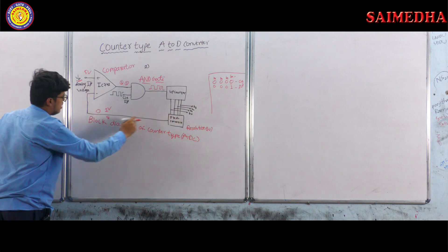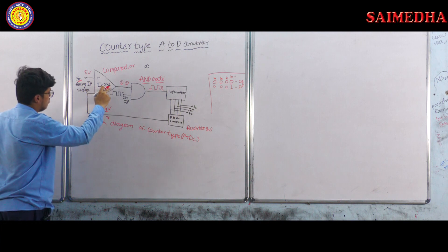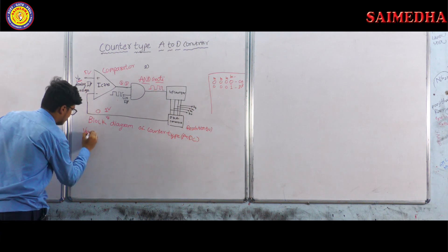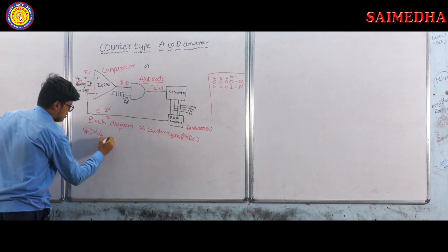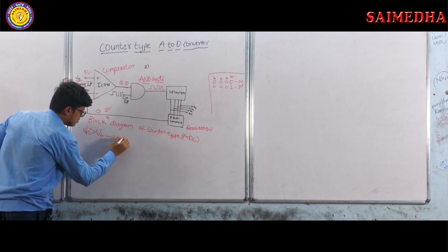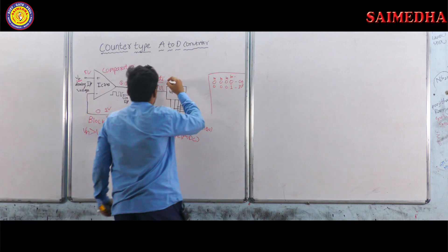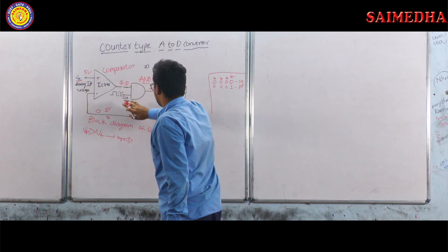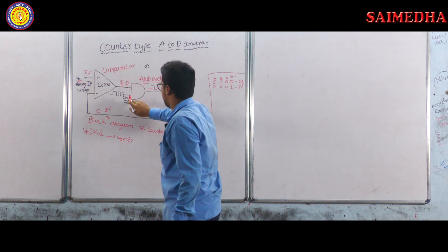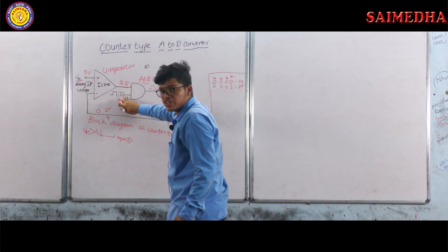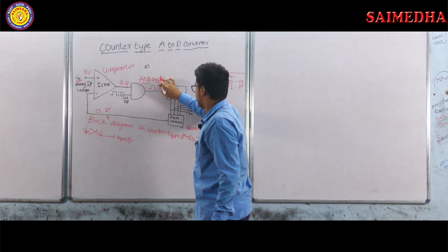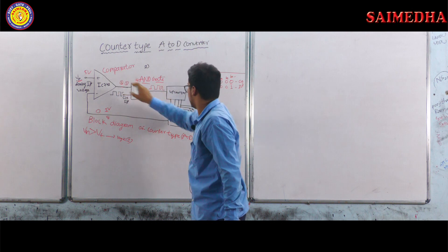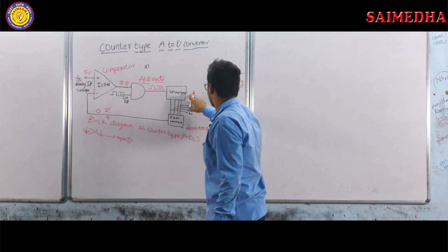The feedback voltage VF from the D to A converter is fed to the inverting terminal of IC741. Since VIN is greater than VF, the comparator produces logic one. The AND gate multiplies the clock with logic one — since one input is one and the other is the clock, we get the clock as the output.